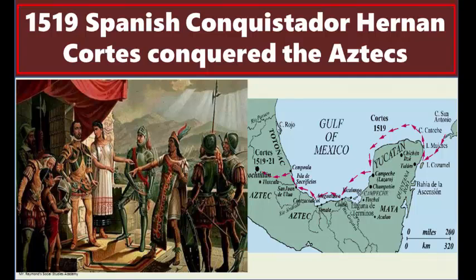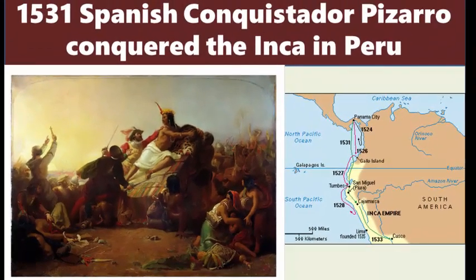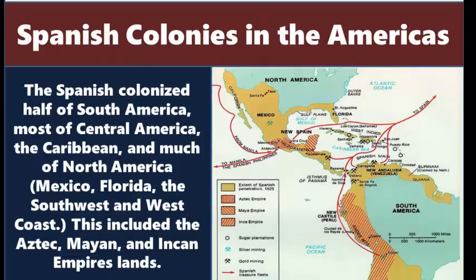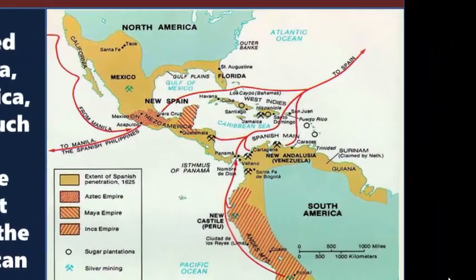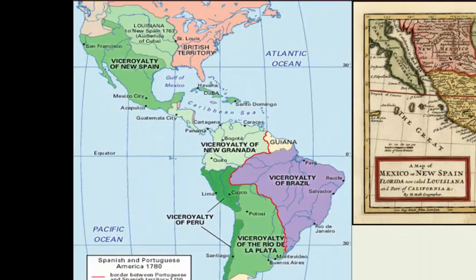In 1519, conquistador Hernán Cortés conquered the Aztecs, a very powerful force who dominated northern Mexico. Twelve years later, another Spanish conquistador, Francisco Pizarro, traveled down the west coast of South America after having crossed over to the Pacific Ocean around present-day Panama. He and his soldiers sailed down and conquered the Incan Empire located in present-day Peru. Spain would go on to conquer and colonize vast amounts of land in the Americas, including half of South America, most of Central America, and much of North America — including Mexico, Florida, the southwest, and the west coast of what is now the United States. Here is a look at how these lands would be divided up more than 250 years later in 1780, around the founding of the United States, with Spain in green, Portugal in purple, and the British in pink.